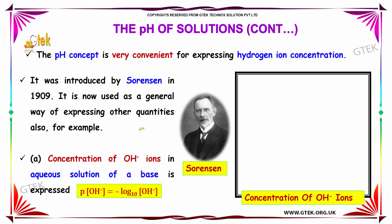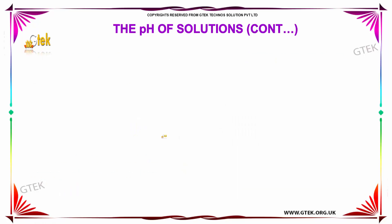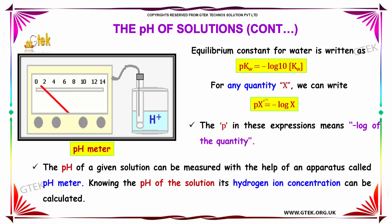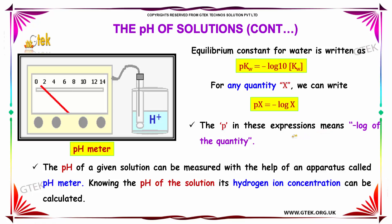For example, the concentration of OH⁻ ions in aqueous solutions of a base is expressed as pOH⁻ equal to minus log of OH⁻ to the base 10. The equilibrium constant for water is written as the negative log of Kw to the base 10. For any quantity x, we can write px equal to minus log of x, where p in these expressions means minus log of the quantity.